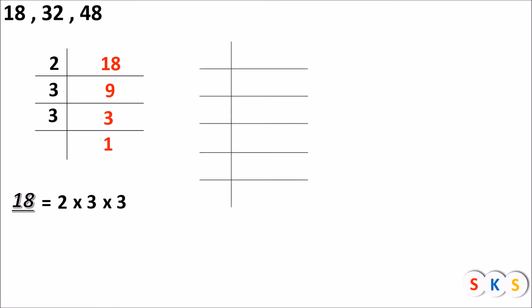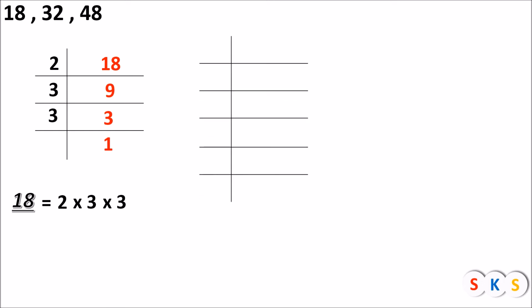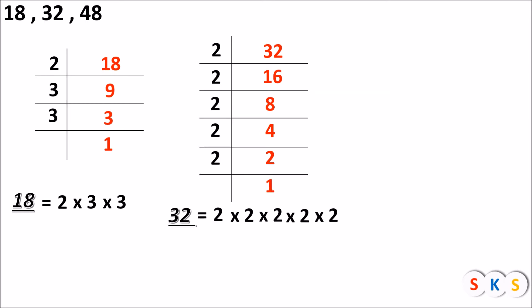Same way, we will find the prime factor of the next number, and the next number is 32. 32 is divisible by 2 and 2 is prime — 2 16s are 32. We will divide 16 by 2 — 2 8s are 16. We will divide 8 by 2 — 2 4s are 8. We will divide 4 by 2 — 2 2s are 4. We will divide 2 by 2 — 2 1s are 2. So, the prime factor of 32 is 2 into 2 into 2 into 2 into 2.